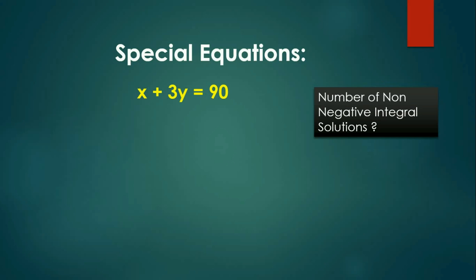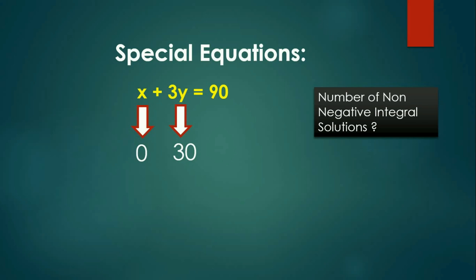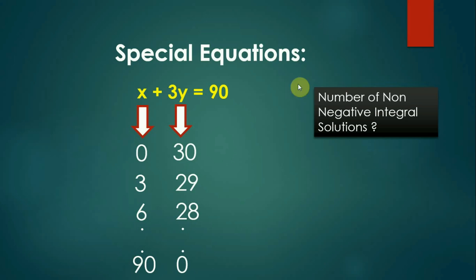A little hit and trial would give us the first solution as x equal to 0 and y equal to 30. The next solution would be 3, 29 — so x equal to 3 and y equal to 29 satisfies this equation. Similarly, the next set would be 6, 28 and so on up to 90, 0. Non-negative integral solutions include only positive integral values and 0, so 0 is also included.